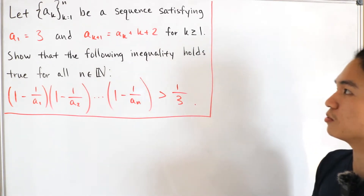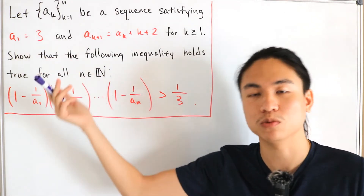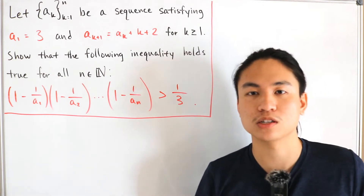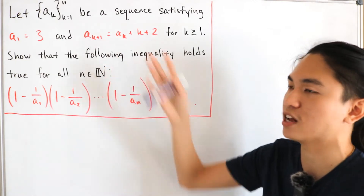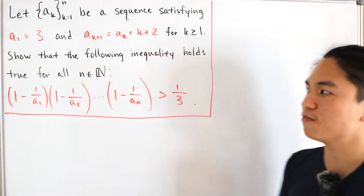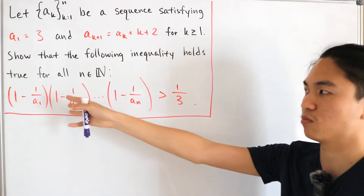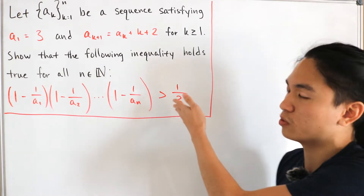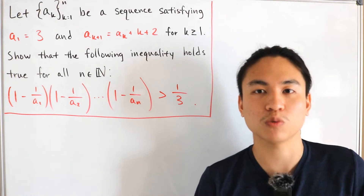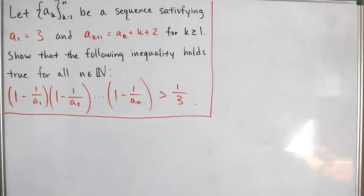We're dealing with sequences, so it's always good to play around with the numbers. We're given a sub 1 is equal to 3, so let's consider computing a sub 2, a sub 3, and so on up to a sub n. We need to analyze and make observations about these numbers, and then use the recurrence relation to find a pattern. So let's start off by writing out the given: a sub 1 is equal to 3.